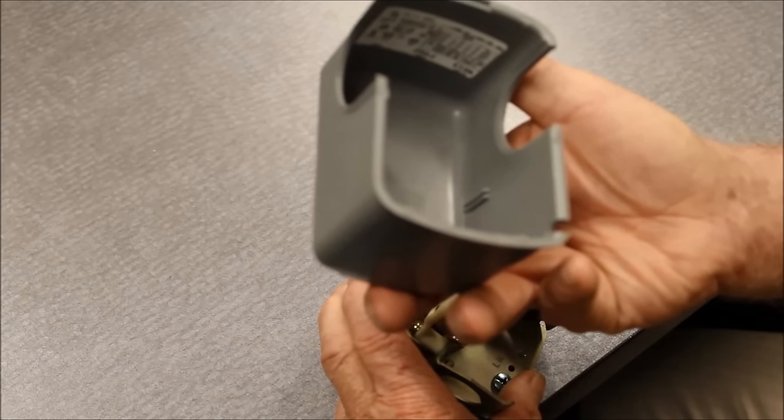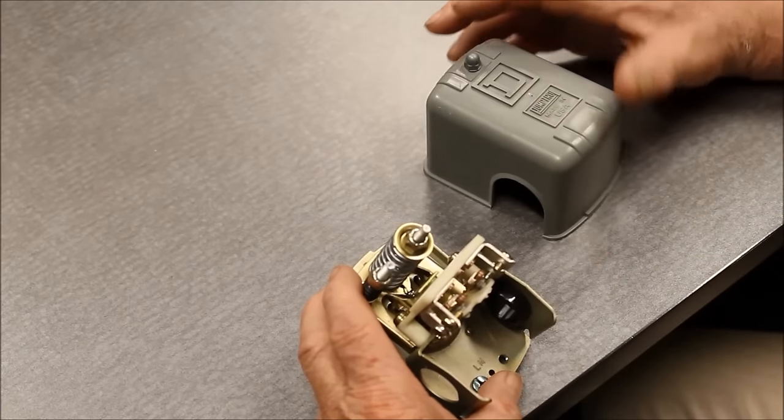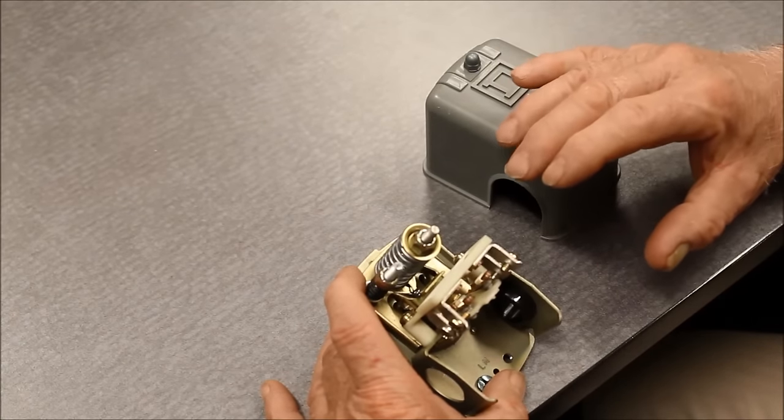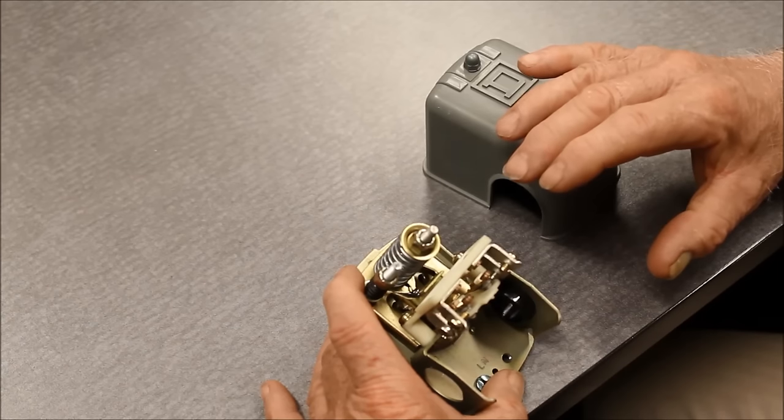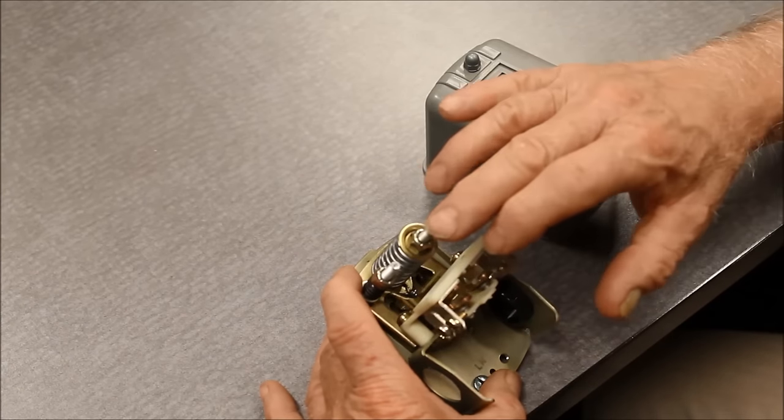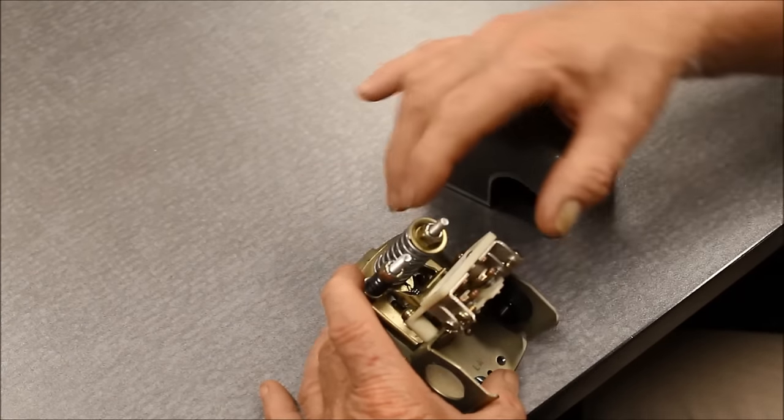The switch itself will have two springs if it has an adjustable differential, or only one spring if the differential is not adjustable. The larger of the springs sets the range. The smaller of the springs sets the difference between the on and off points.